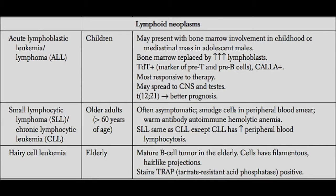Lastly, warm autoimmune hemolytic anemia is associated with CLL. So if you ever have an older patient presenting with warm autoimmune hemolytic anemia — remember those are IgG antibodies against the red blood cell — you're going to have to rule out CLL.